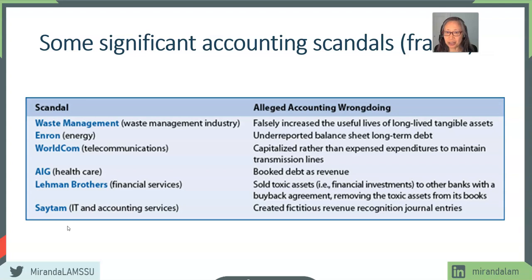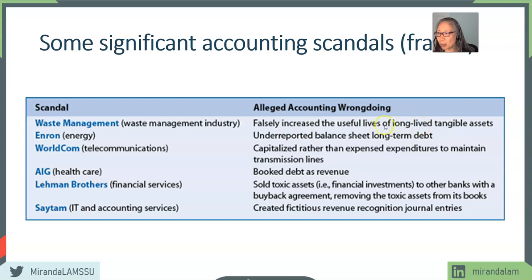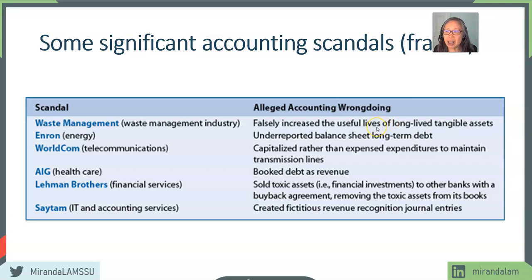Here are some famous accounting scandals. Waste Management falsely increased the useful life of long-lived tangible assets. That increases asset size, presenting a false sense of solvency. It also increases earnings by lowering the appropriate depreciation expense — understating expenses. So you increase earnings and increase the value of assets, but that incorrectly presents the economic value of the firm.